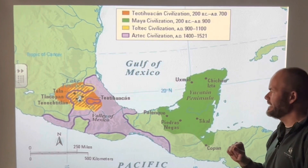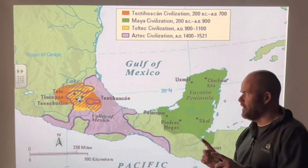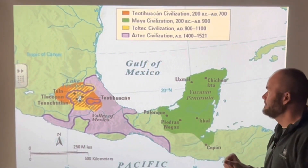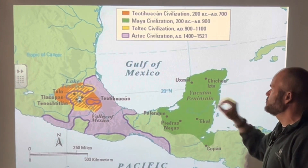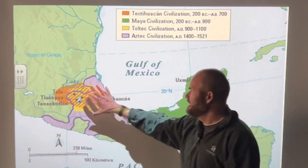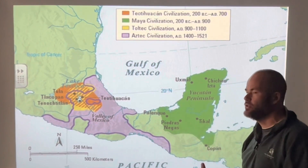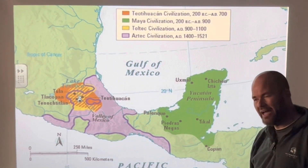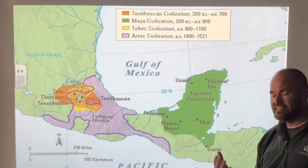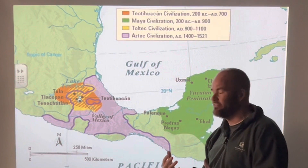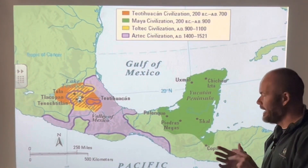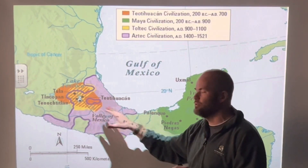A few things jump out as I consider how likely it is that Teotihuacan might have influenced the Aztecs or the Maya. The likelihood of influencing the Maya seems strongly related to time — these civilizations are in existence at the same time, though there's a decent distance between them; they're close enough that there was probably trade and interaction, but not right next to each other. The Aztec civilization existed significantly after Teotihuacan, but in terms of distance they're essentially right on top of each other.